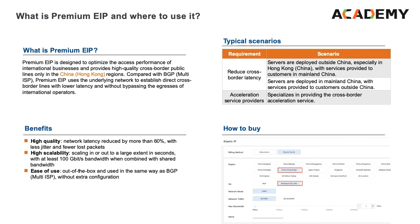Premium EIP is designed to optimize the access performance of international business and provides high quality cross-border public lines only in the China and Hong Kong regions. Compared with BGP multi-ISP, Premium EIP uses the underlying network to establish direct cross-border lines with lower latency and without bypassing the egresses of international operators.